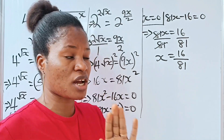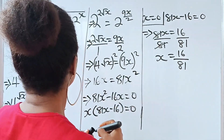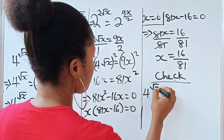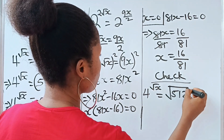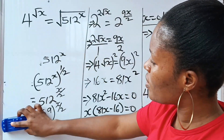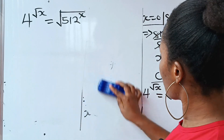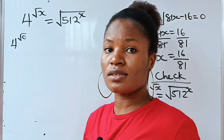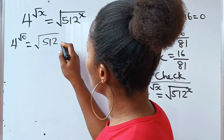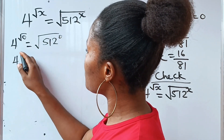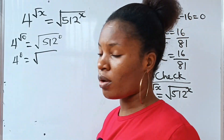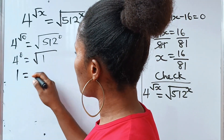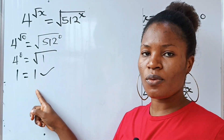Now let's check the values of x to ensure they are correct. The equation says 4 raised to the power of root x equals the square root of 512 to the power of x. Checking x equals 0: 4 raised to the power of root 0 equals square root of 512 to the power of 0. Root 0 is 0, and any number raised to the power of 0 is 1. So 4 to the power of 0 is 1, and square root of 1 is 1. The left-hand side equals the right-hand side.